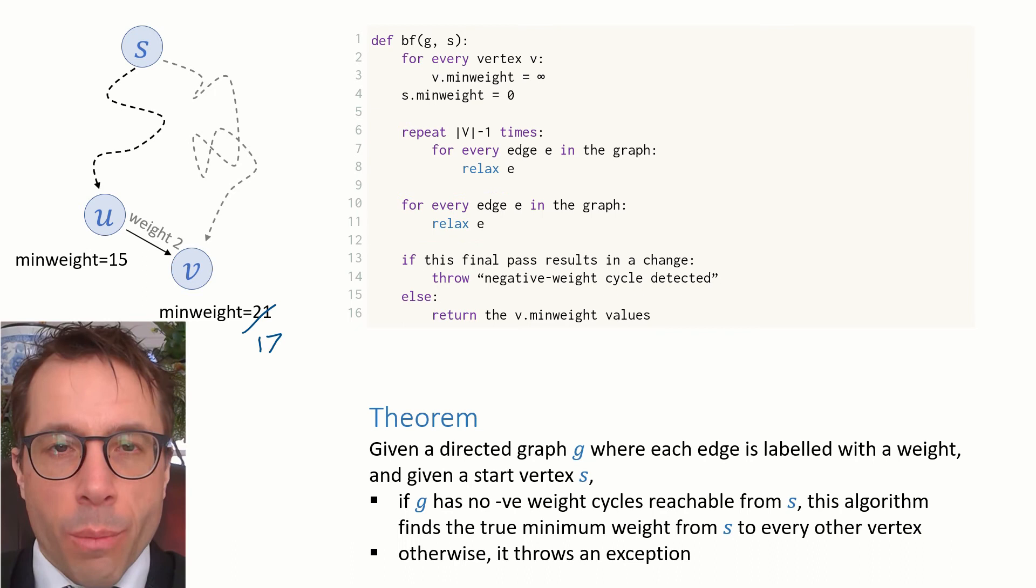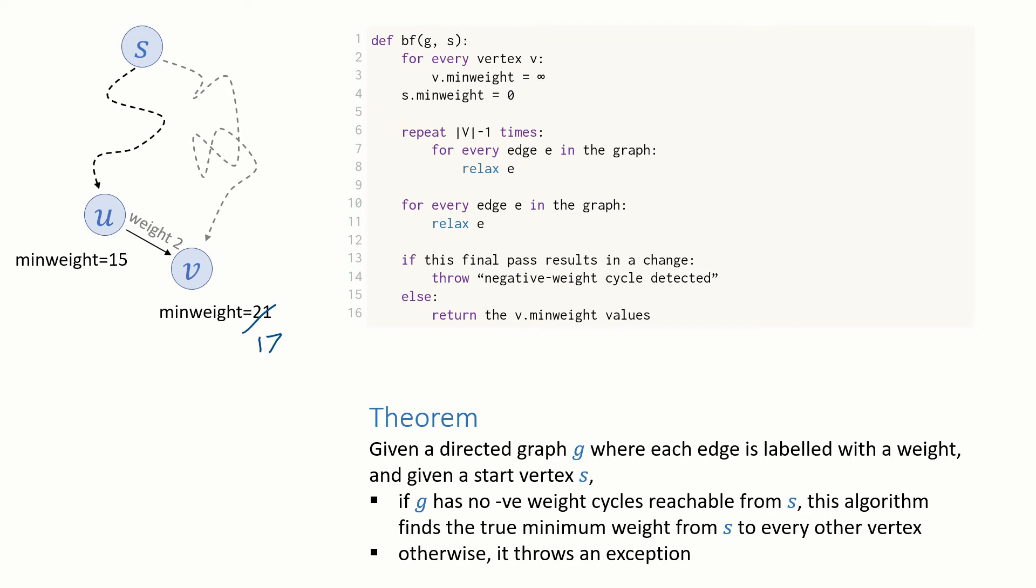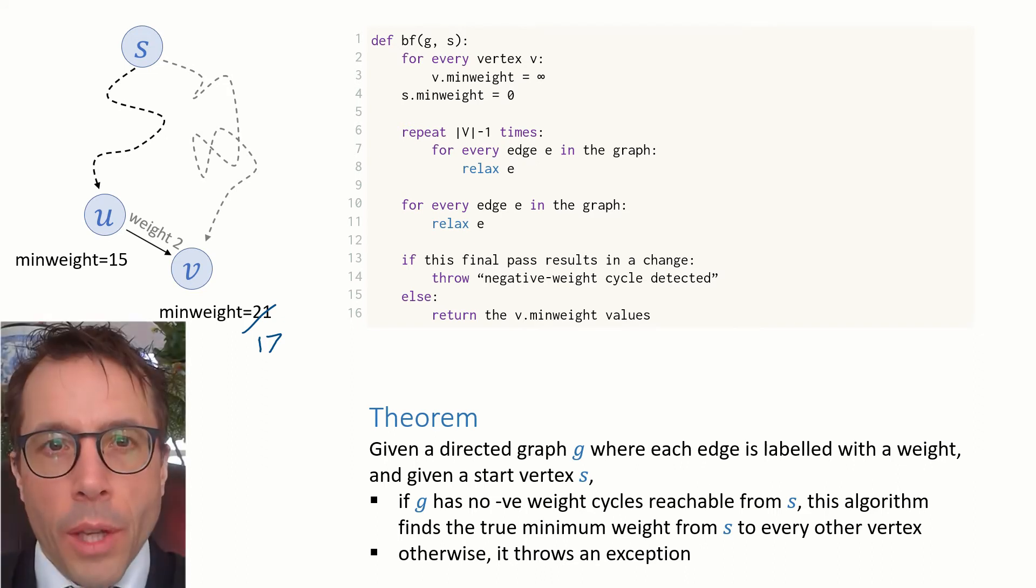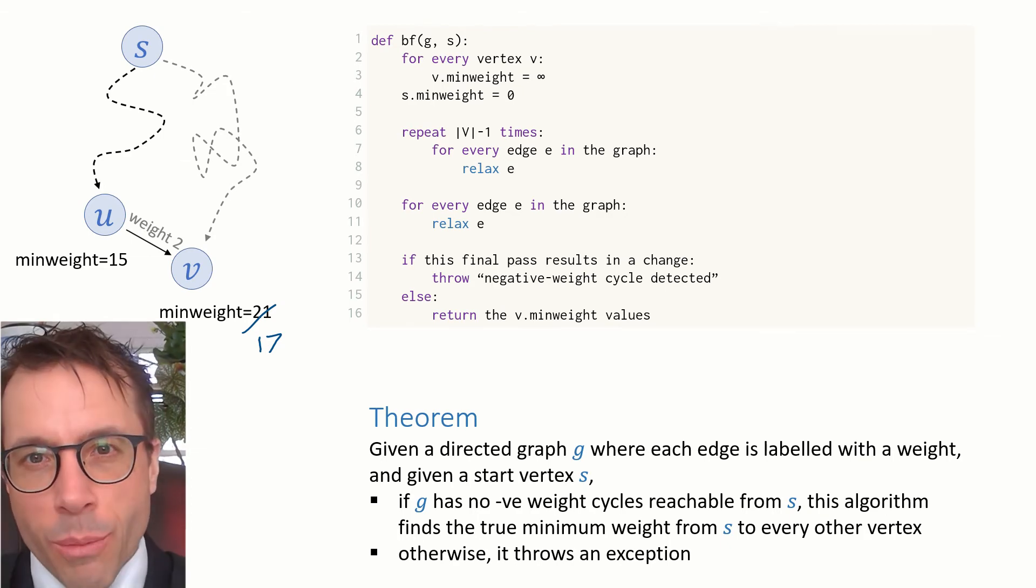We really ought to state a proper theorem about what this algorithm does. Here's the theorem. I'll give you a moment to read the statement. Basically, this theorem says the algorithm does what we want it to do. It's good practice to write out a proper statement of what we want the algorithm to do and to explicitly flag all the possible outcomes, because if we don't have a proper statement of what we want the algorithm to do, we can't even begin to reason about whether or not it works.